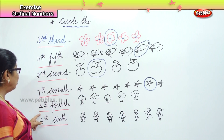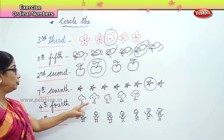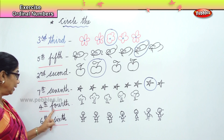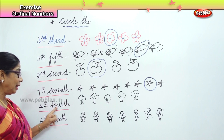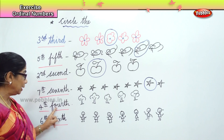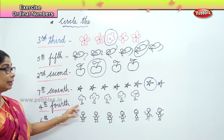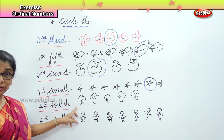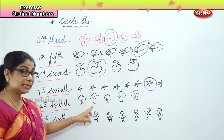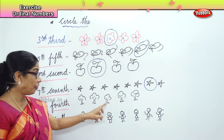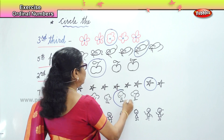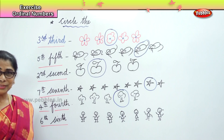Circle the fourth tree. Fourth short form: T-H — four and T-H. Spell: F-O-U-R-T-H. Fourth. Now look at the fourth tree to circle: first, second, third, fourth — and this is the fourth tree, and you circle the fourth tree.